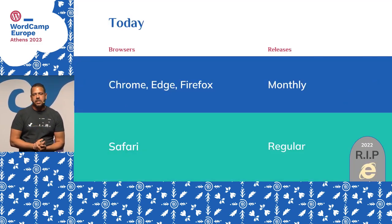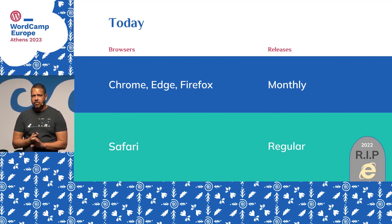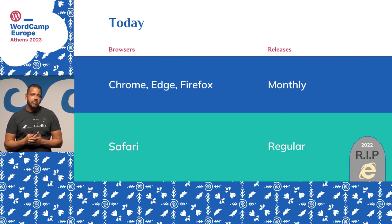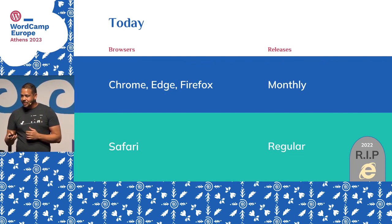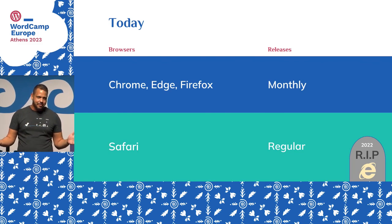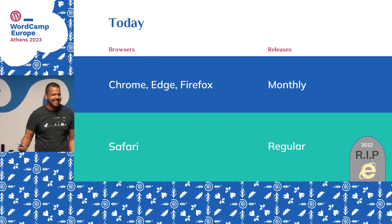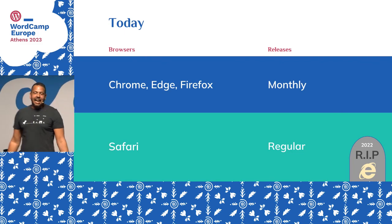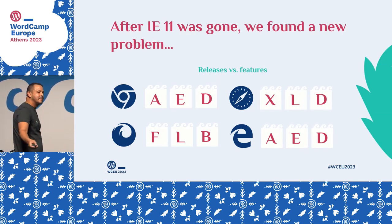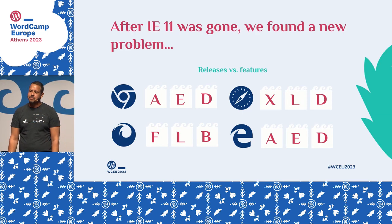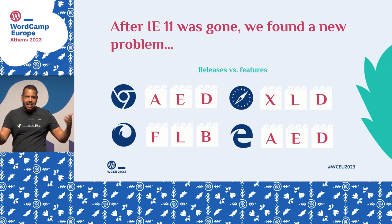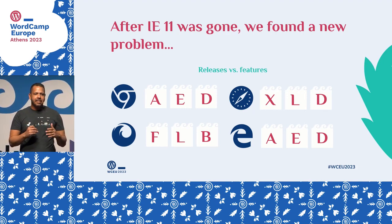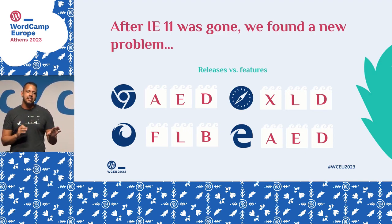Today we have Chrome, Edge, and Firefox releasing new features every month, and Safari with regular updates as well. And we have the good news that Internet Explorer 11 is gone. But now those browsers release new features every single month, and features A, E, and D are all different — none of them have the same features implemented at the same time. So which feature should I apply for my project? Because none of the browsers have the same features implemented simultaneously.